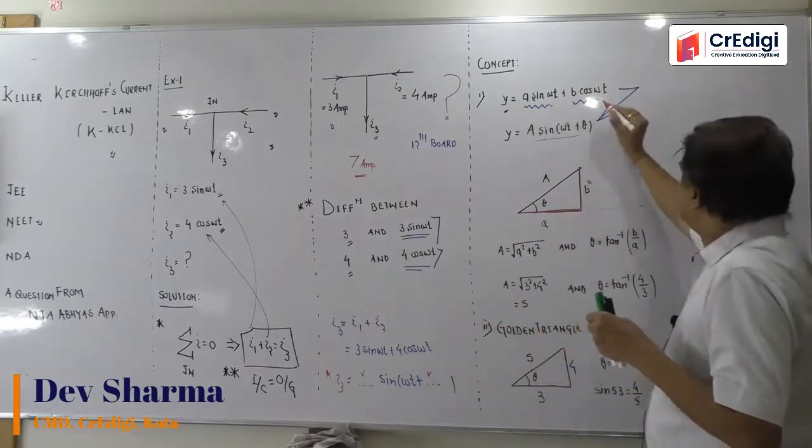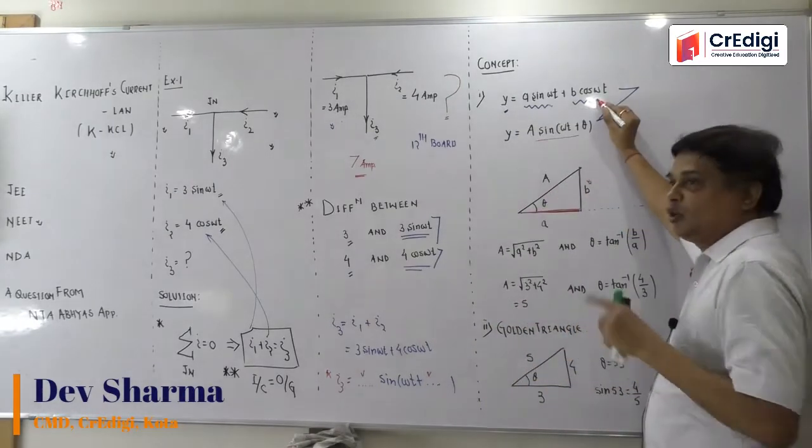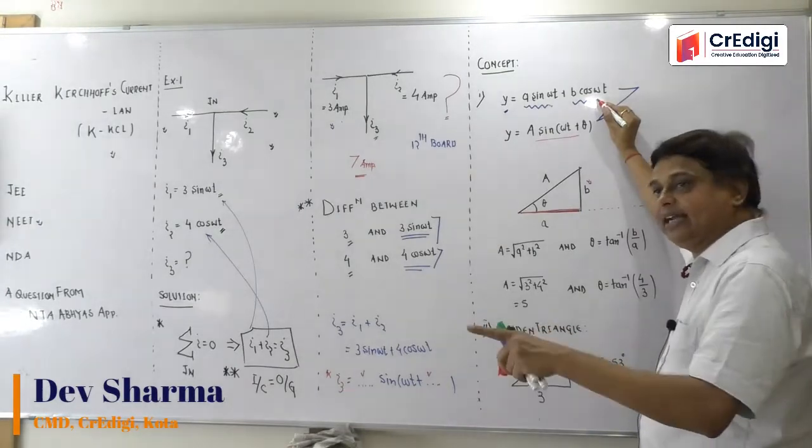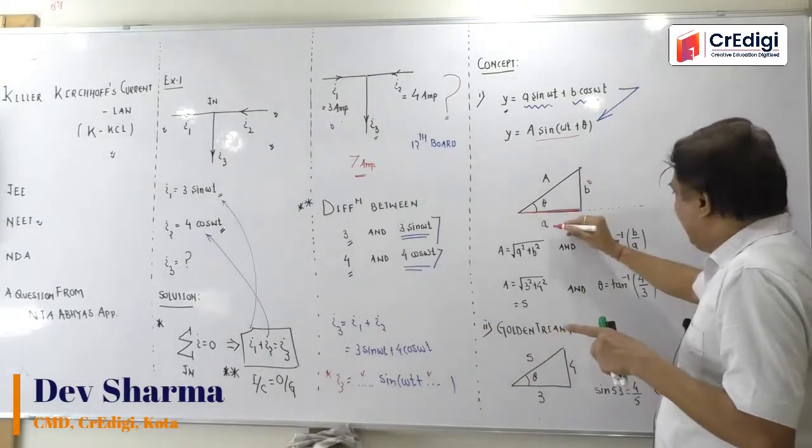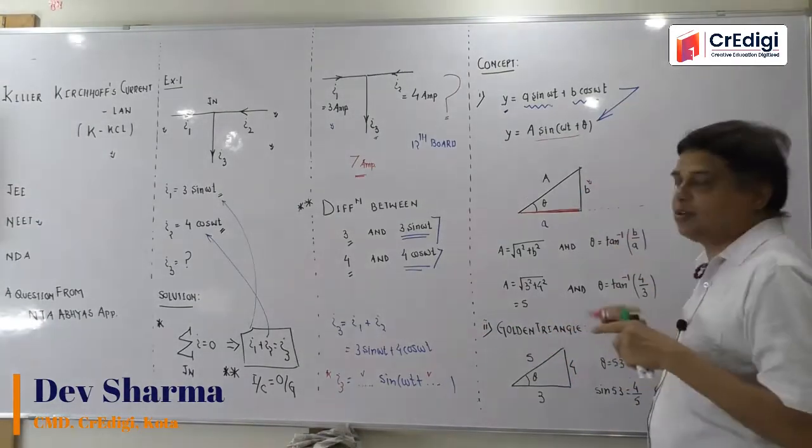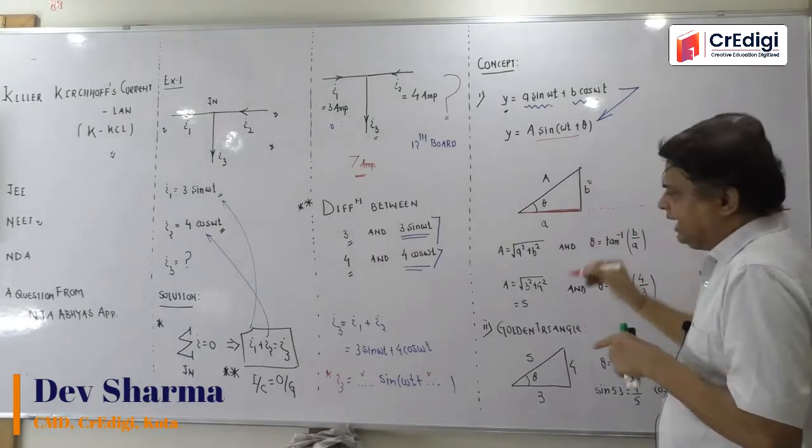This is B. B is with whom? Cosine. Cosine is sine from 90 degrees. This is B. B is with whom? Cosine. Cosine from 90 degrees.